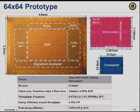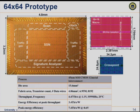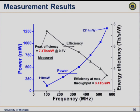Here are plots with actual measured data. Looking at supply voltage versus frequency and throughput: at full voltage, we get 559 MHz, achieving about 4.47 terabits per second. Scaling down to about 0.55 volts gives 28 MHz performance but only 550 millivolts. In terms of power, at full voltage our crossbar consumes about 1.3 watts, giving 3.4 terabits per second per watt efficiency. At low voltage, we get it down to 110 milliwatts, achieving 7.4 terabits per second per watt energy efficiency.